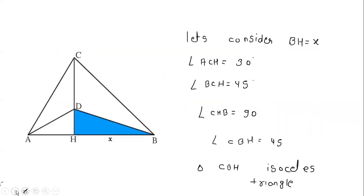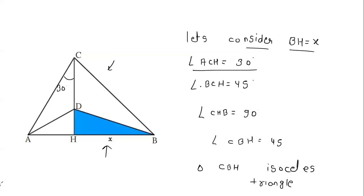Let's see how we can solve this. In this figure, let's consider BH is equal to X. In the problem it is given that angle ACH is 30 degrees and angle BCH is 45 degrees.